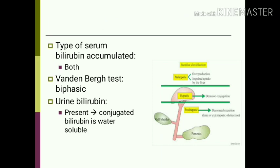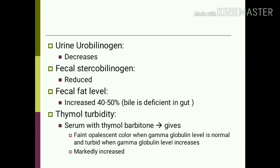In hepatic jaundice, since both bilirubins are increased, the Van den Berg test is biphasic. Urine bilirubin is present because conjugated bilirubin is water soluble. Urine urobilinogen decreases because the liver cannot conjugate or excrete it. Fecal stercobilinogen is also reduced. Fecal fat increases by about 40 to 50 percent because the liver cannot excrete bile, making bile deficient and fat absorption impaired. The thymol turbidity test gives a turbid appearance due to increased gamma globulin levels.